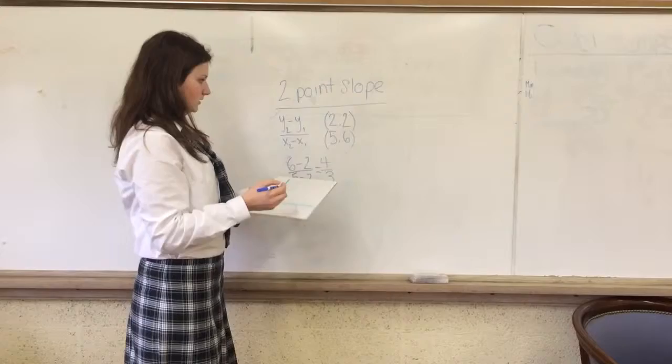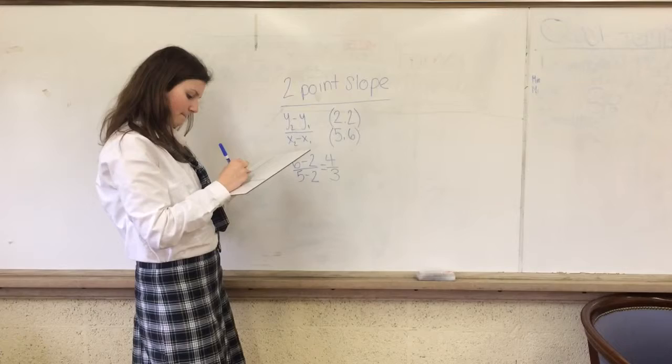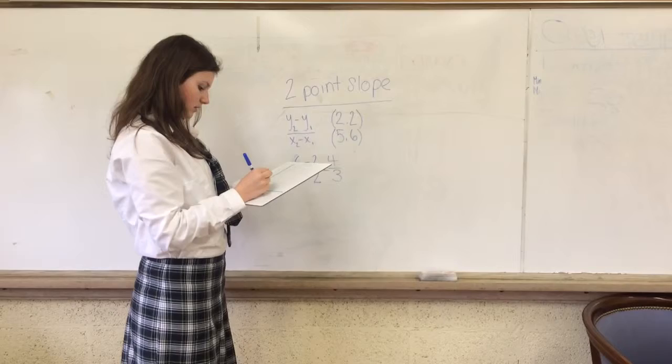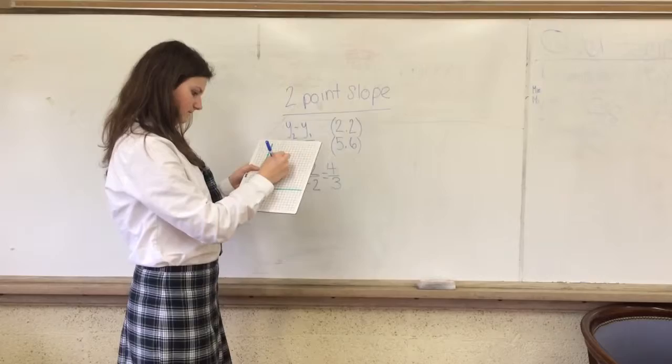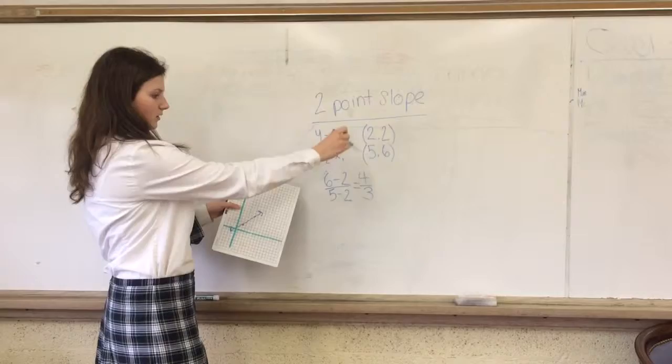So then we're going to graph it on the graph. We're going to plot the slope and then use the slope to find the different points. So you're going to draw the line, and then you can use the slope to see if you did the equation right.